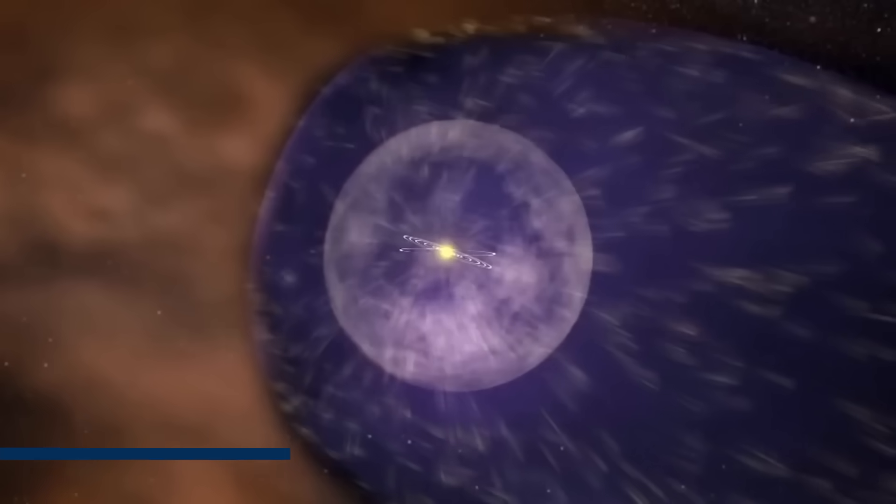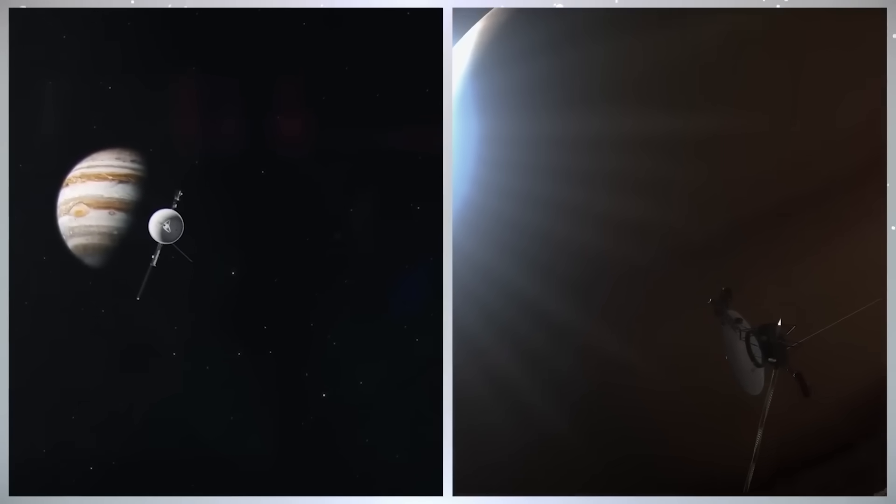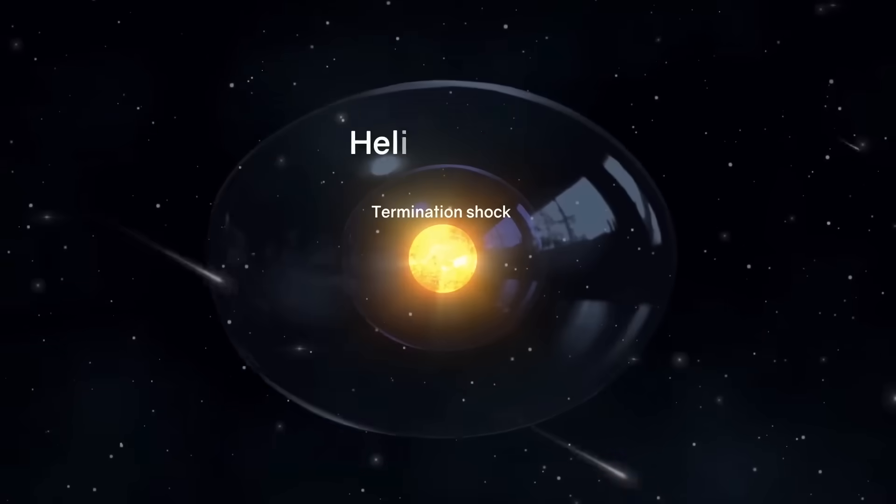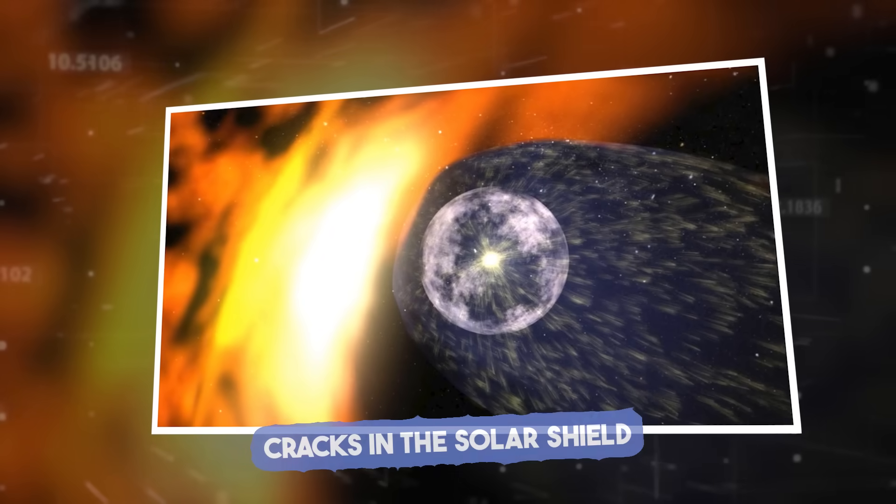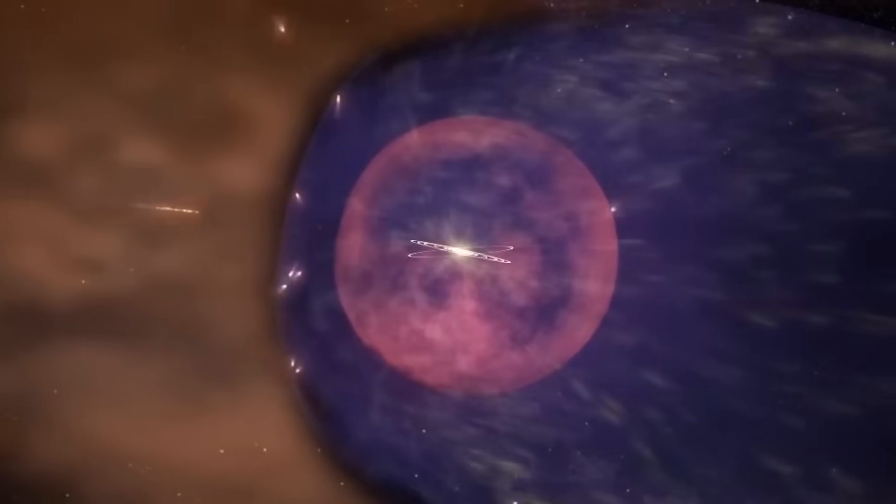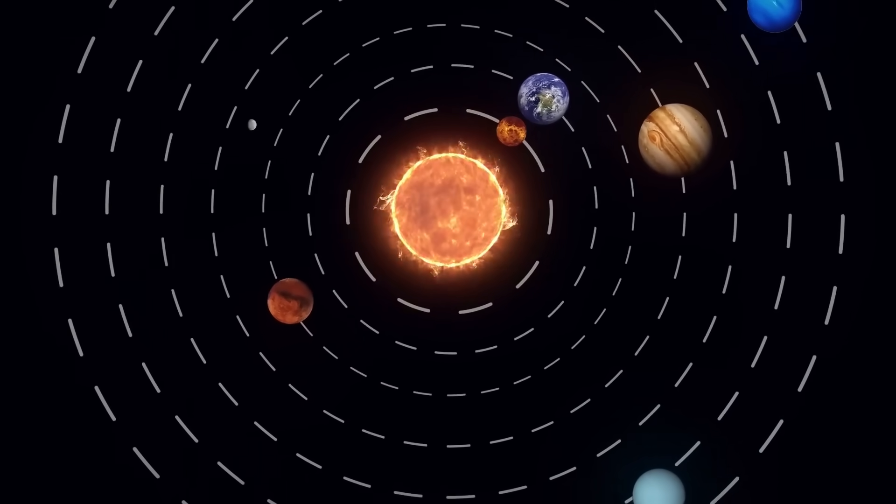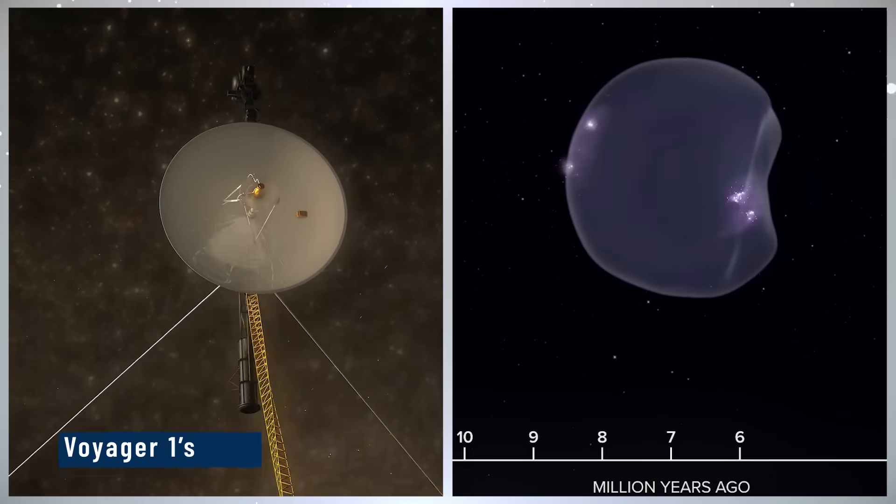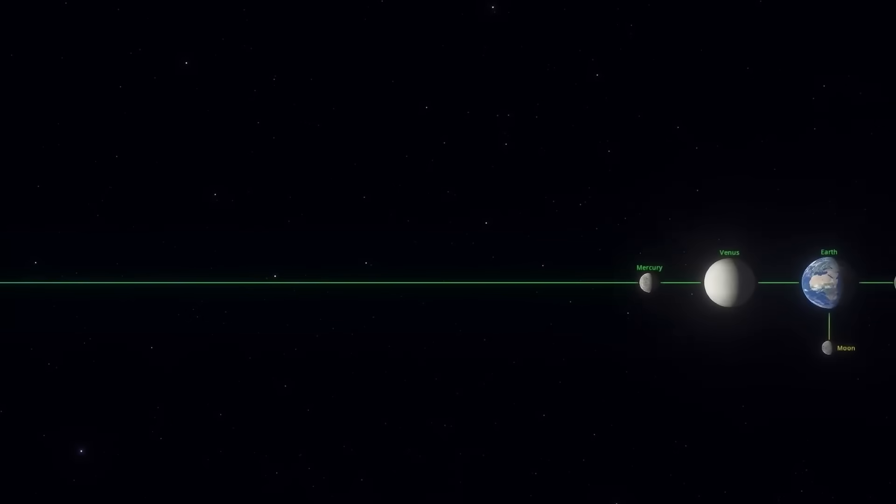This cosmic rupture has opened new questions about the solar system's defenses. To understand what this means for space travel and Earth, we need to examine the implications of a weakening heliosphere. The heliosphere acts like a giant shield, protecting Earth and other planets from high-energy cosmic rays that could damage life and technology. Voyager 1's data now shows this shield is weakening. The sudden surges in cosmic rays Voyager detected mean more dangerous particles can flood the solar system, posing risks for astronauts and satellites.